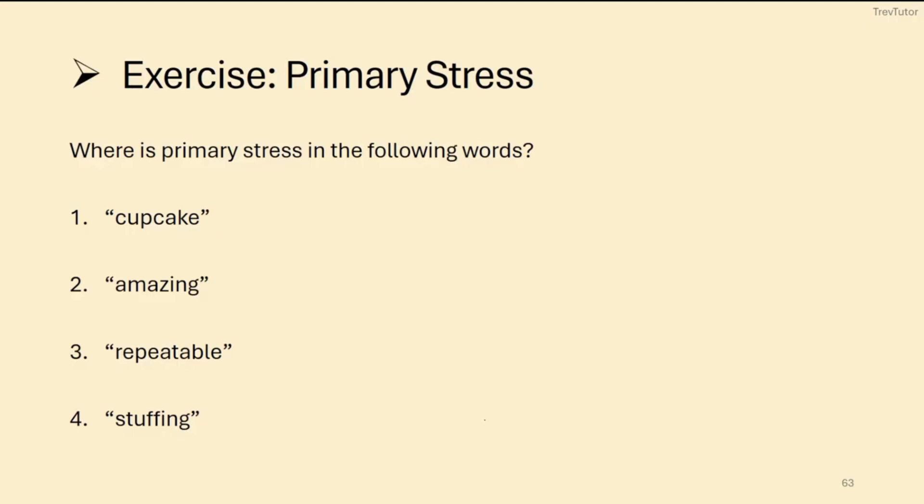So see if you can identify primary stress in the following words. We won't transcribe them. We'll just put the little accent above the vowel in the stressed syllable. So in one, is it cupcake or cupcake? Well, it's cupcake. Stress on the first syllable. What about amazing? Amazing. That is stressed on the second syllable. It's not amazing or amazing. It's amazing.